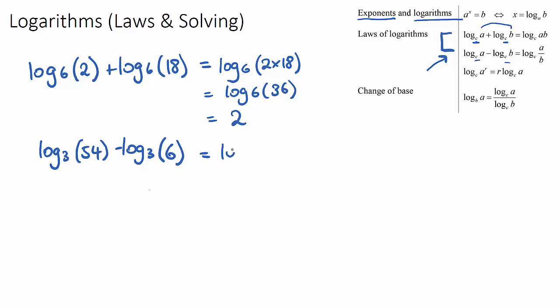but I can use the same base law that says if this is a minus and they have the same base, I will have log base 3, and I'll have 54 divided by 6. Now this is log base 3, and 54 over 6 is 9, and log base 3 of 9 is 2. So very good law, this one.